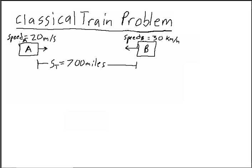Hello everyone. This video is going to work through what's called a classical train problem where we have two trains approaching each other at some speed and there's some distance between them and we want to find out the time it takes for them to meet and their position when they meet. So there's our scenario. We have train A and train B. They're separated by a total distance of 700 miles. The speed of train A moving to the right is 20 meters per second. The speed of train B moving to the left is 30 kilometers per hour and we want to know what time from the start time and when and where they will meet.